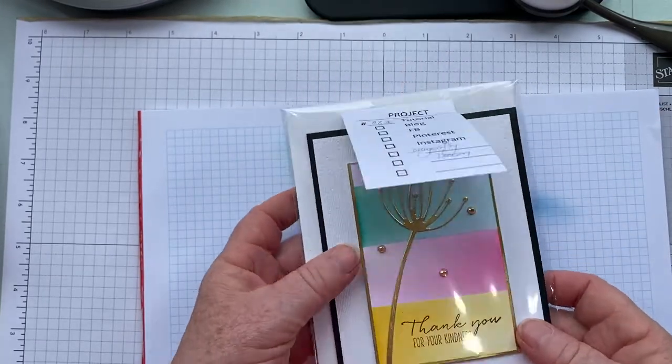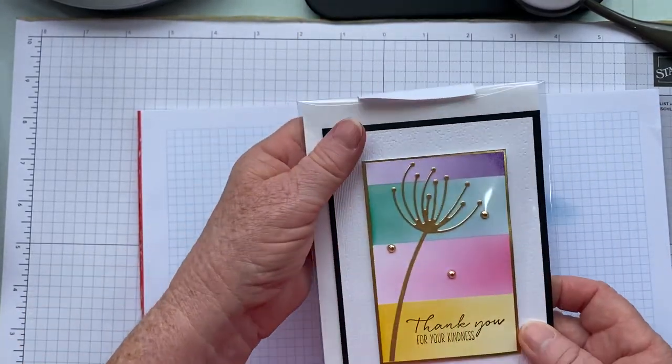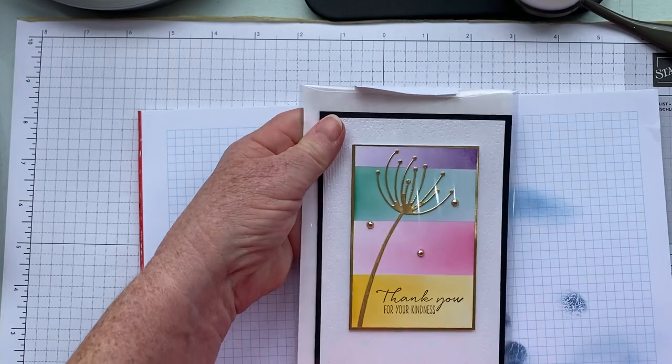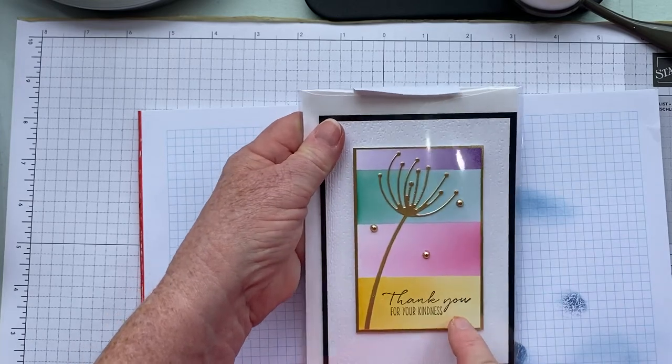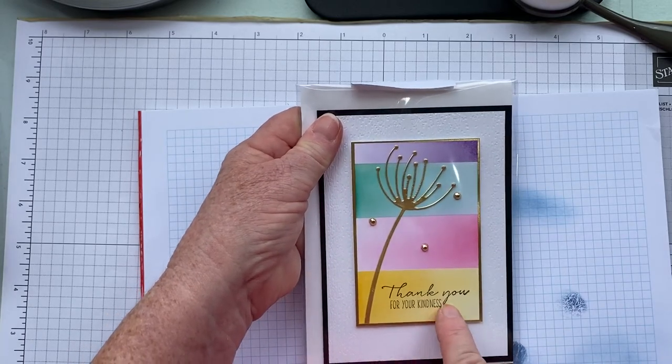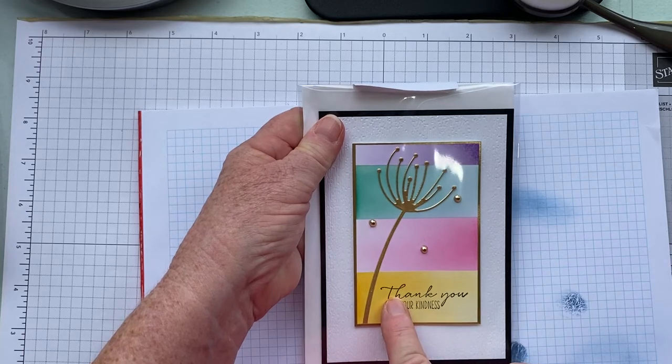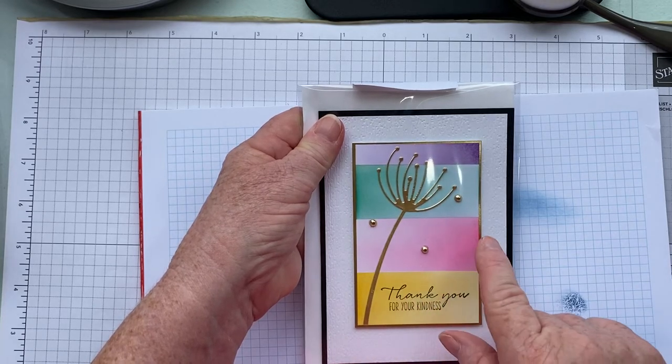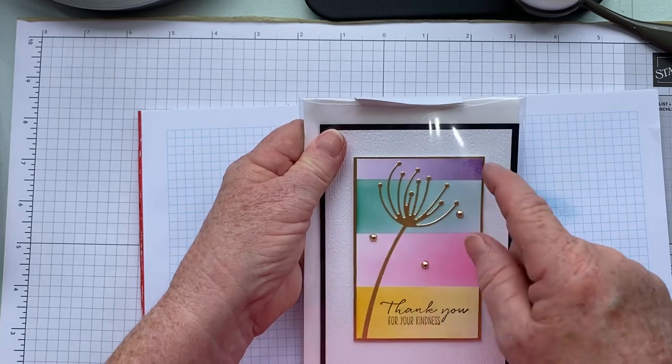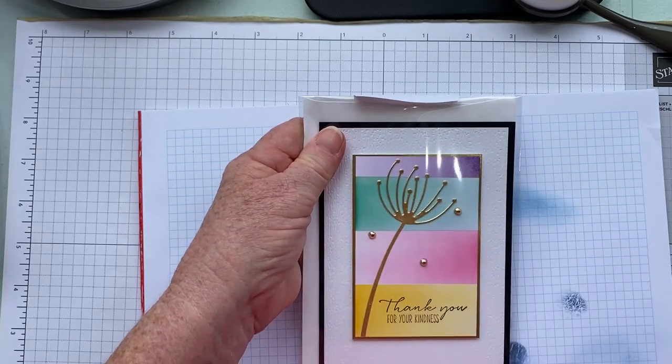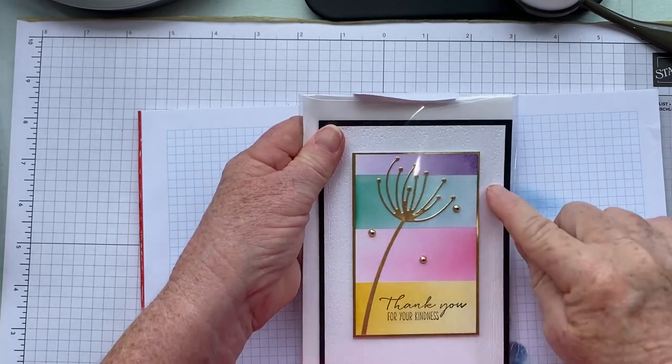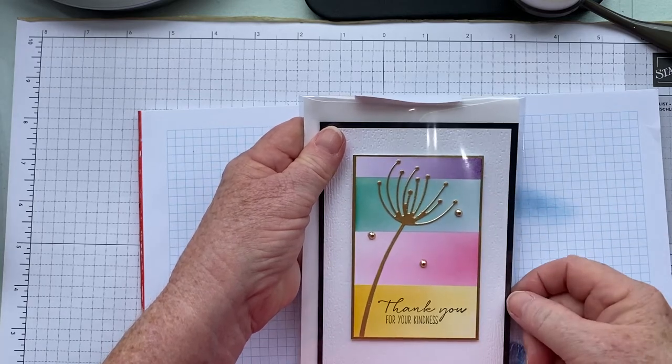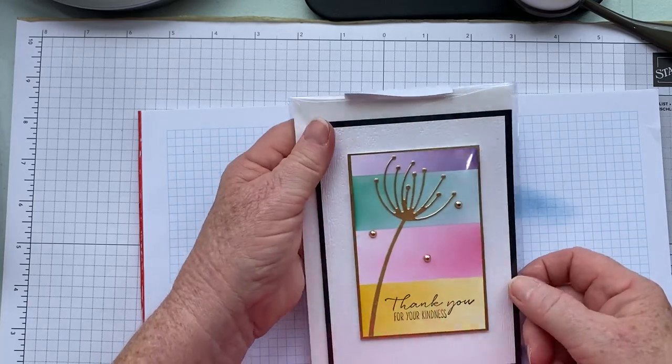That's another one doing the same block that I just showed you. That is Mango Melody, Bermuda Bay, and Gorgeous Grape - all the bright colors. The background's embossed with the Subtle embossing folder and I've backed the block onto gold foil.